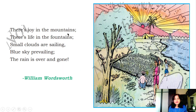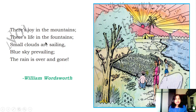There is a joy in the mountains, there is life in the mountains. Small clouds are sailing, the blue sky prevailing, the rain is over and gone. The rainy season is over — there is joy in the mountains, small clouds are sailing, the blue sky prevailing, and the rain is over and gone.